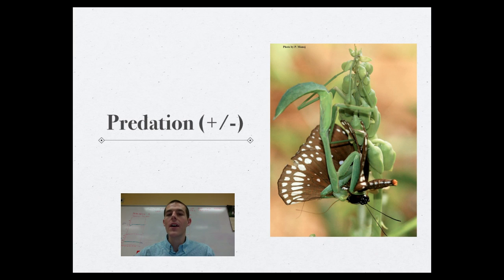Now through the rest of the video, I'm going to be going through specific species interactions, and they're going to be denoted using this positive-negative symbol system. So positive obviously means the species is being benefited. Negative means that the other species is being harmed. You can have positive-positive, you can have negative-negative.